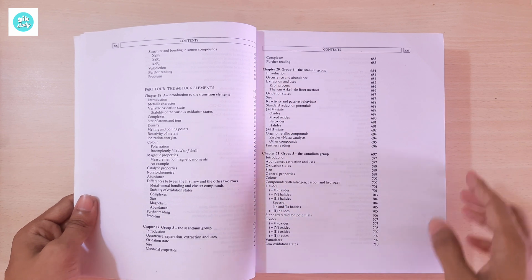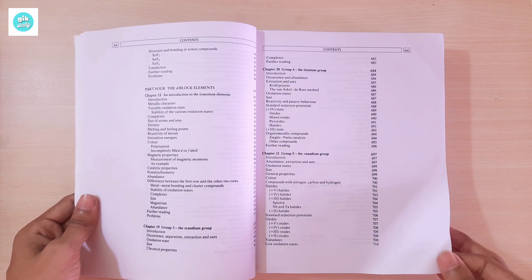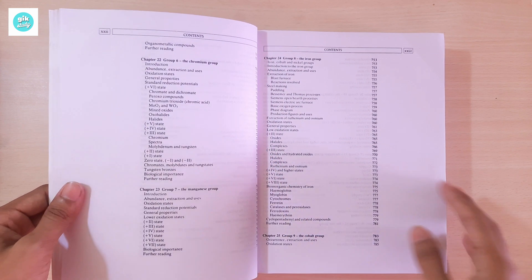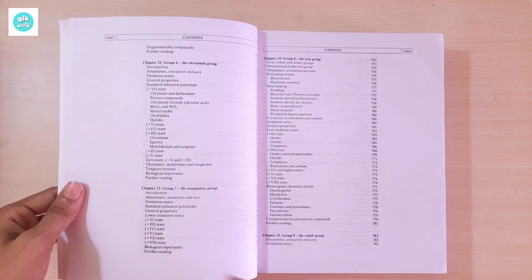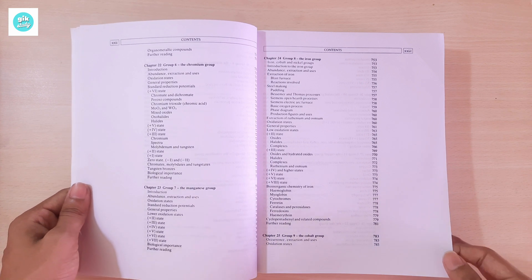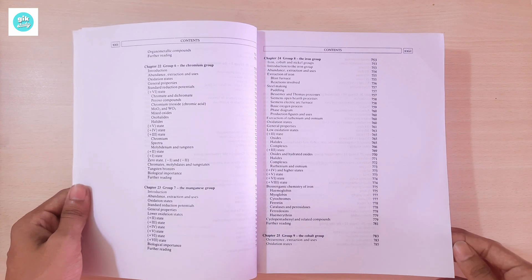Chapter 20: Group 4, the Titanium Group. Chapter 21: Group 5, the Vanadium Group. Chapter 22: Group 6, the Chromium Group. Chapter 23: Group 7, the Manganese Group. Chapter 24: Group 8, the Iron Group.